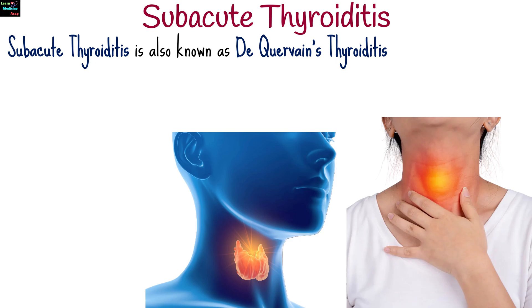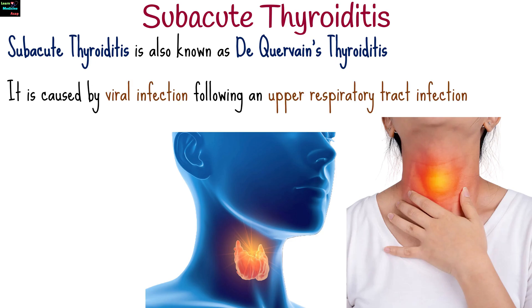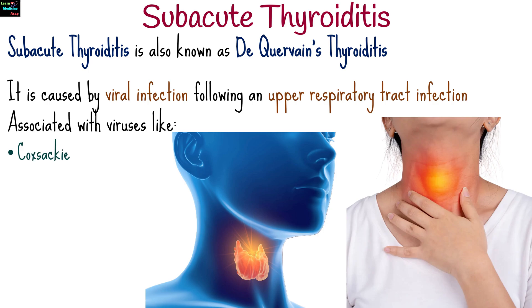Subacute thyroiditis, also known as De Quervain's thyroiditis, is caused by viral infection, often following an upper respiratory tract infection. It is associated with viruses like Coxsackie, mumps, or influenza.